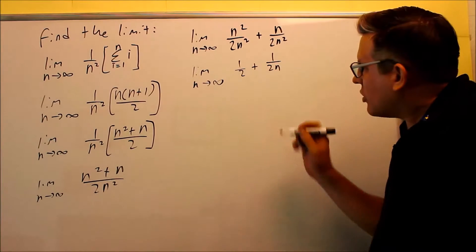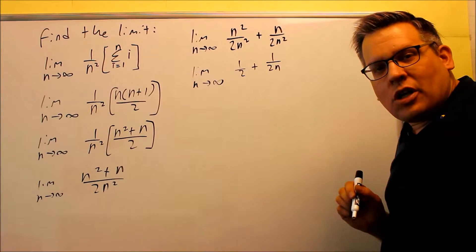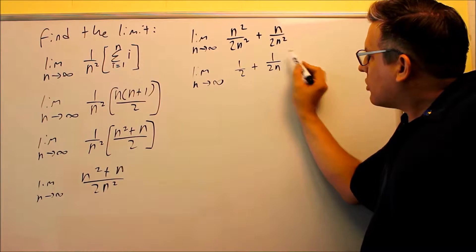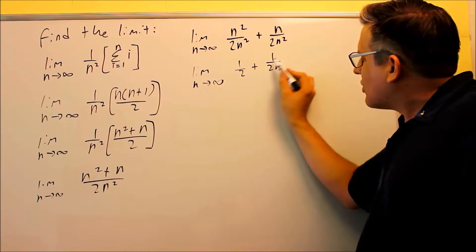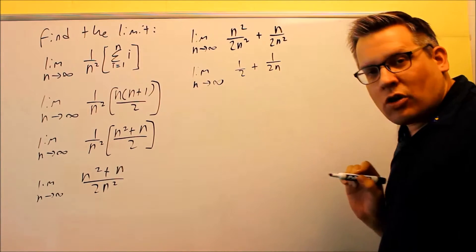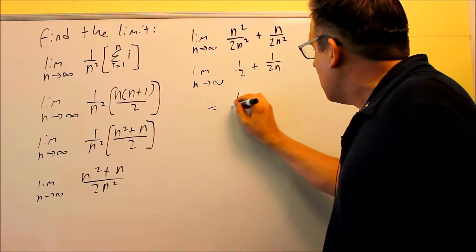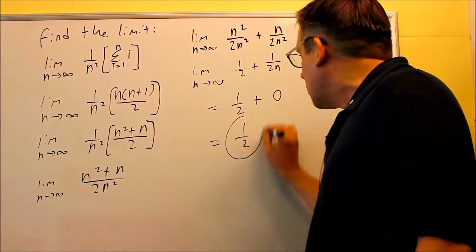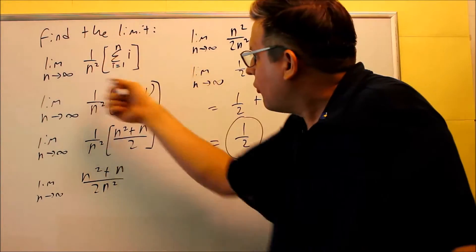I'm going to apply the limit to each one of these. We have to go back to the limits we talked about at the beginning of this course: if you have a number on top and a variable on the bottom, as n goes to infinity, as the bottom gets bigger and bigger, the whole thing gets smaller, which means it goes to zero. So we have one half plus zero, which means your final answer is equal to one half.